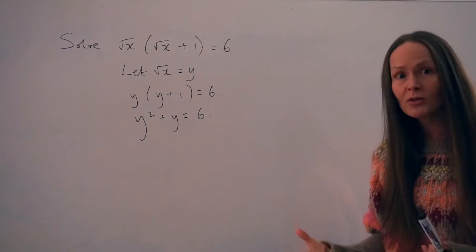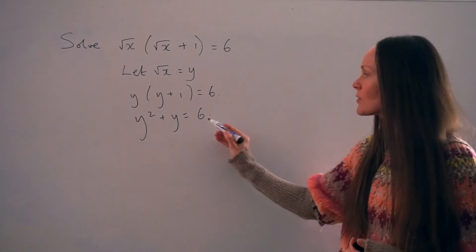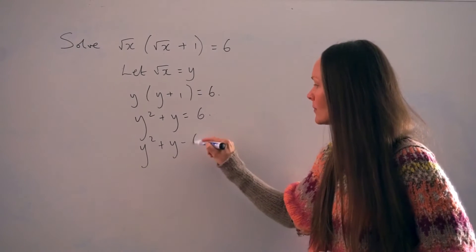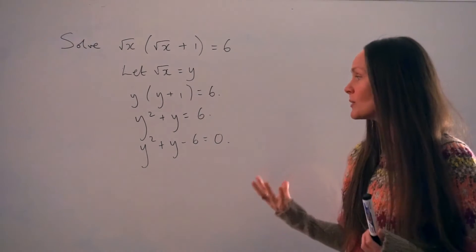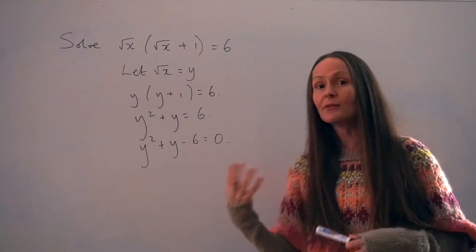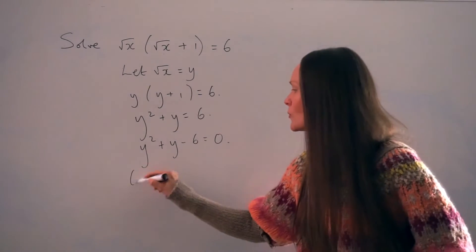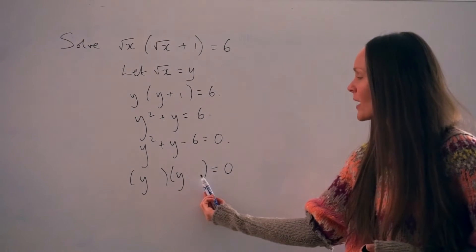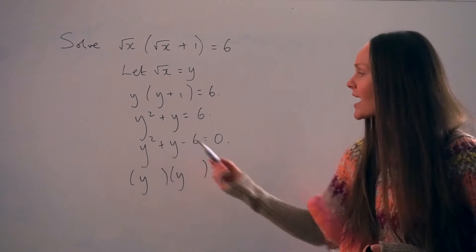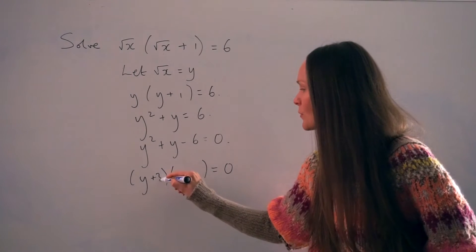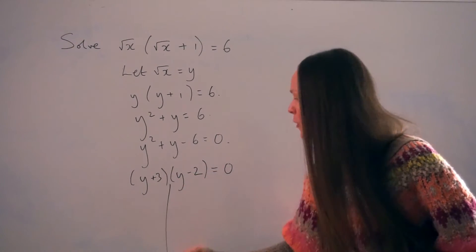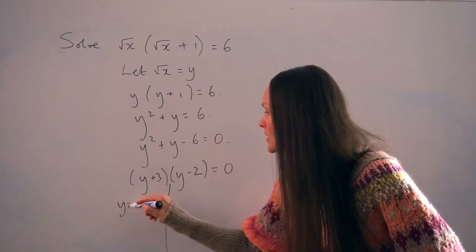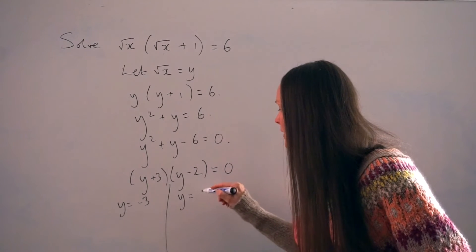When solving a quadratic equation, it should be rearranged to equal 0. So I'm going to move this 6 over to the left-hand side, so it changes into a negative. This is a nice quadratic that can be factorized. If you can't factorize, you can always use the quadratic formula. These two numbers inside the brackets have to multiply to give negative 6 and add to give positive 1, so they should be positive 3 and negative 2. From here I can read off my two values of y: y equals negative 3 and y equals positive 2.